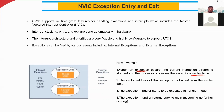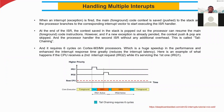When an interrupt is fired, the main code context is saved to the stack — now you know why we use the stack register. The processor branches to the corresponding interrupt vector to start executing the ISR handler. Whenever we have an interrupt, we stop the main program, store the current status, execute the interrupt, complete the ISR execution, and then come back to the main program.